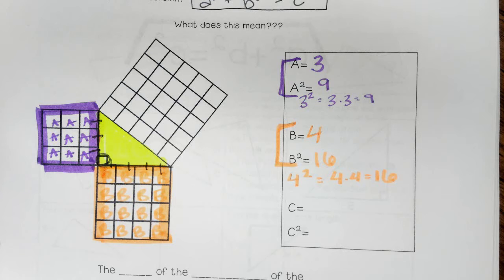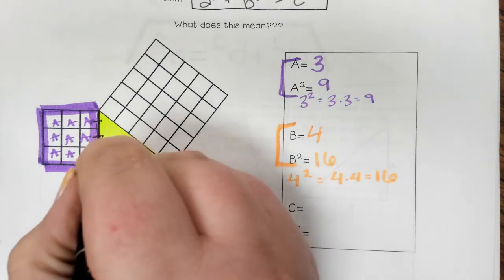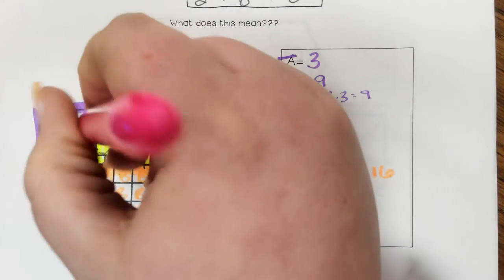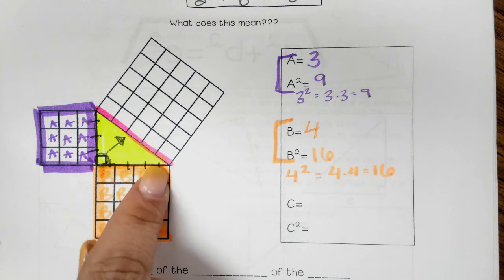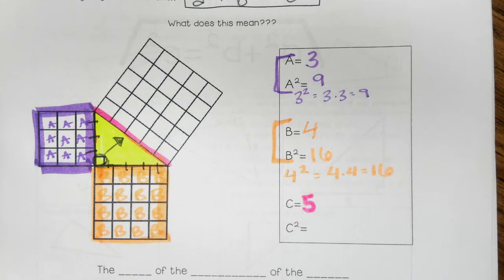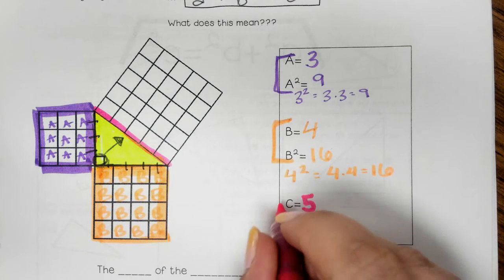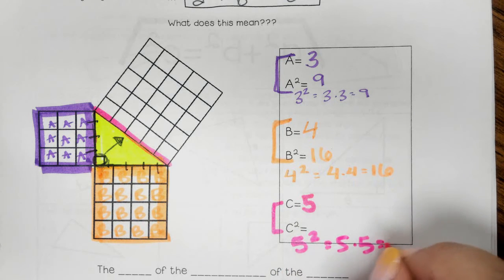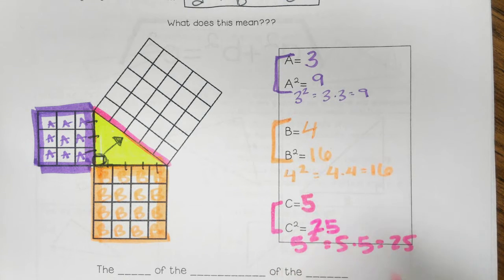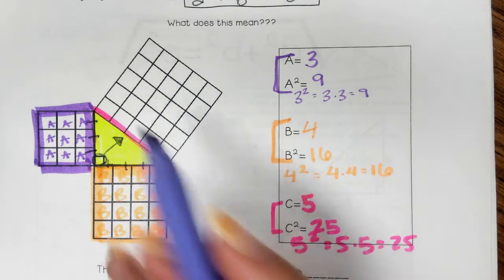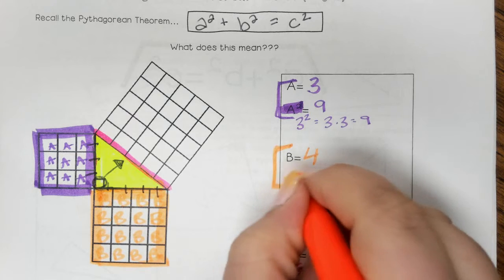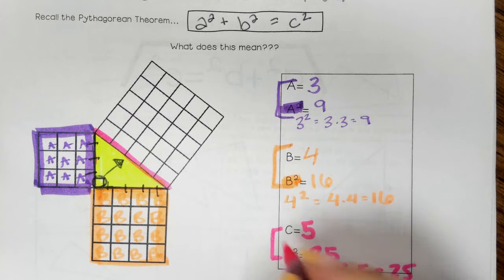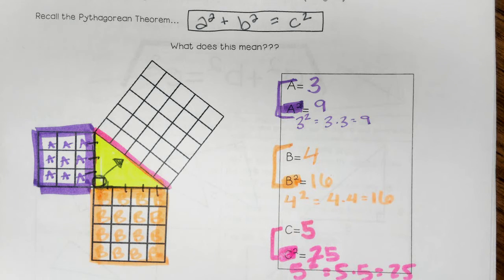Now let's look at c. c is whatever is across from the right angle, because it can only see the right angle and not touch it. So this is c, and c is five units long. c squared then would be five squared, which is five times five, which is twenty-five. What Pythagorean Theorem says is that my purple square — a squared — plus b squared, my orange square, is the same or equal to the hypotenuse squared, or the pink square. And we're going to see that that's true.